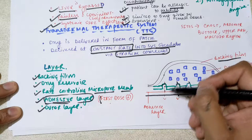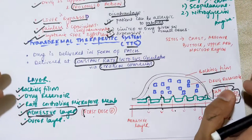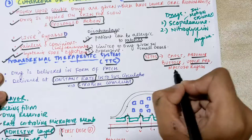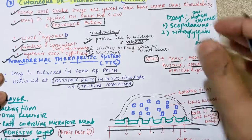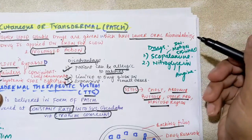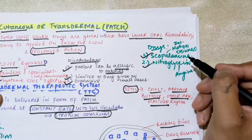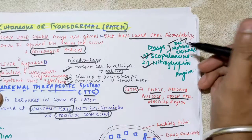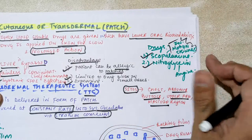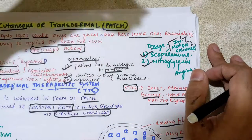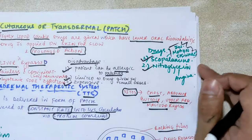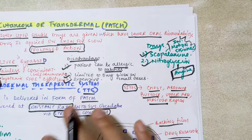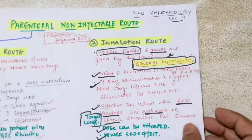The common sites to apply a transdermal patch are the chest, abdomen, buttocks, upper arm, and mastoid region. The drugs given transdermally include scopolamine and nitroglycerin. Scopolamine is an anticholinergic agent used in motion sickness and in patients with hypersalivation, since anticholinergics decrease saliva production. Nitroglycerin is given transdermally for the prophylaxis of angina — the chest pain associated with the heart.